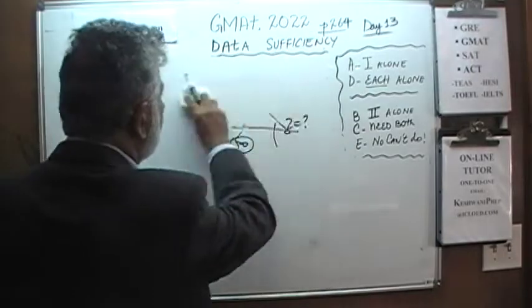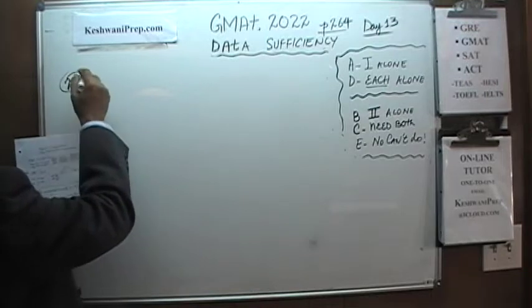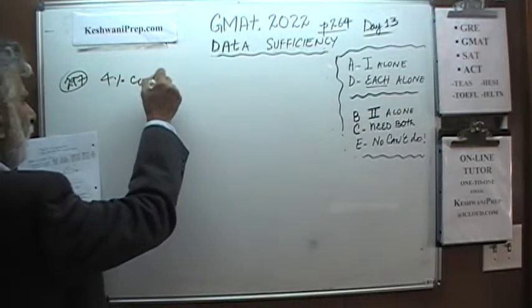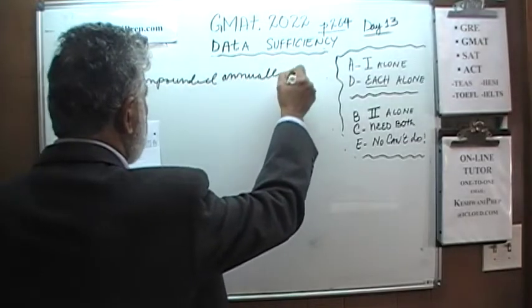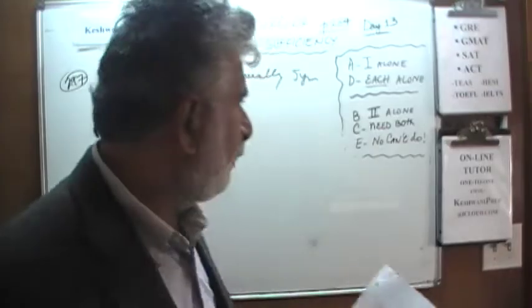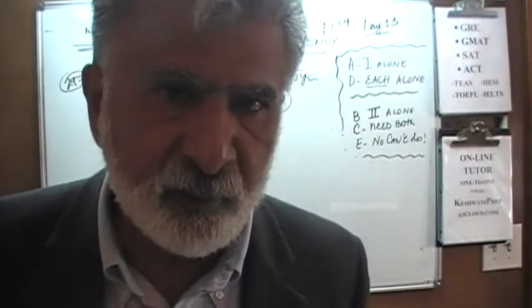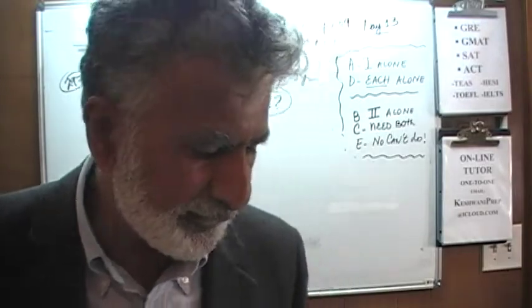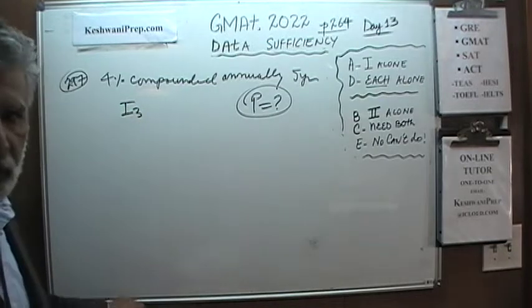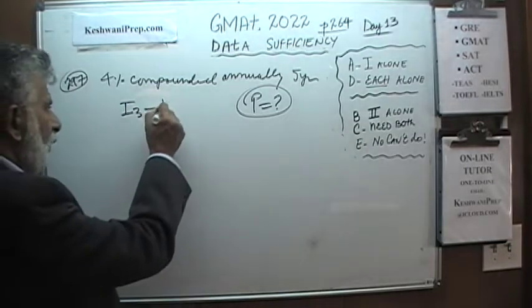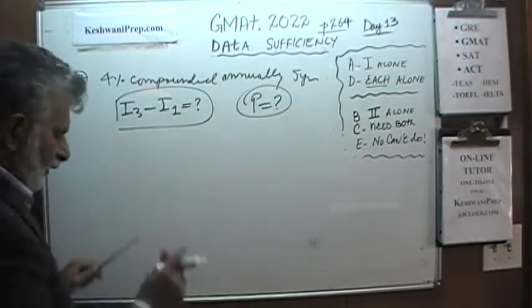Number 297. We are told that we are earning 4% compound interest for five years. We have invested some money — let's call it P for principal. We have no idea what P is; they don't tell us how much we invested. But we know we invested it for five years, it will pay us 4% interest compounded yearly. The question is: the amount of interest earned in the third year is how much more than the amount of interest earned in the first year?